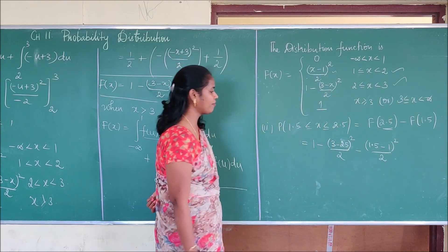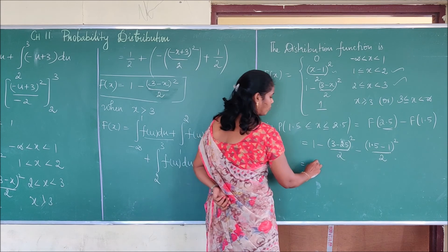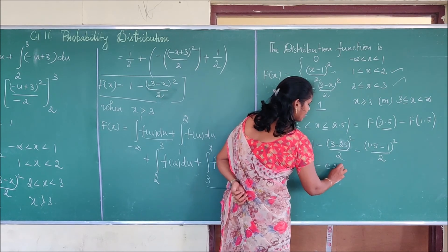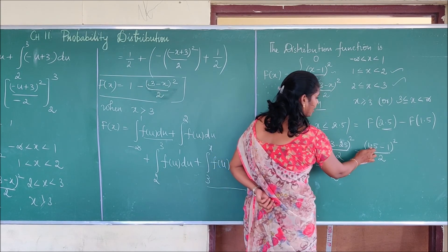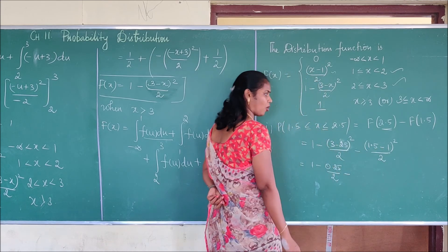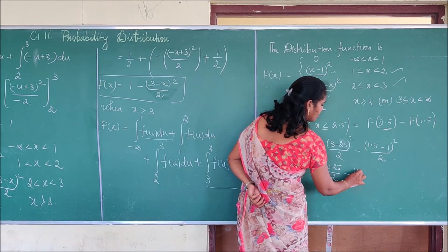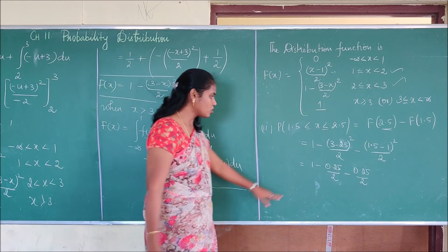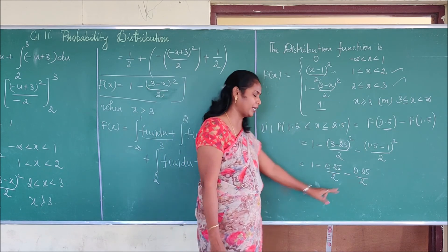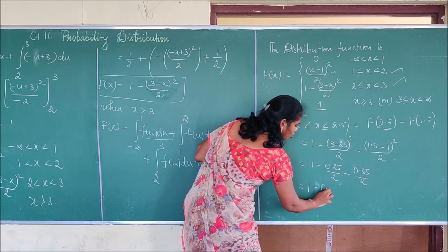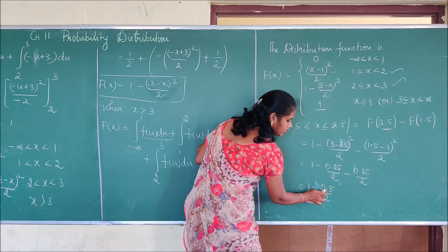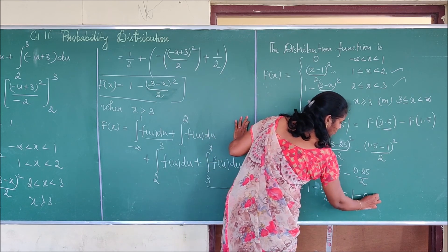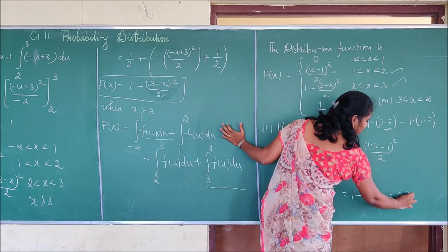Simplifying: 3 minus 2.5 = 0.5, and 0.5 squared = 0.25, so F(2.5) = 1 minus 0.25 by 2 = 1 minus 0.125 = 0.875. Also, 1.5 minus 1 = 0.5, and 0.5 squared = 0.25, so F(1.5) = 0.25 by 2 = 0.125. Therefore P(1.5 ≤ X ≤ 2.5) = 0.875 minus 0.125, which equals 0.75.